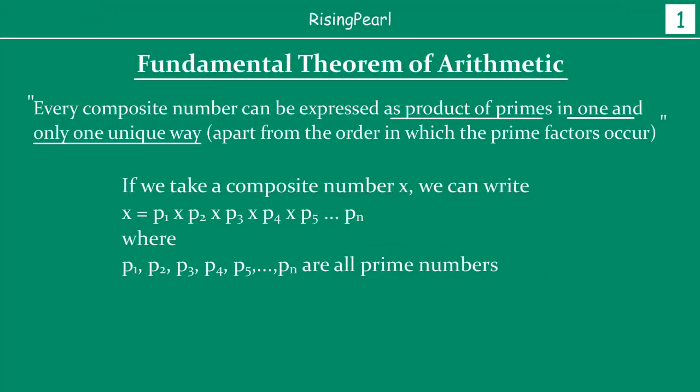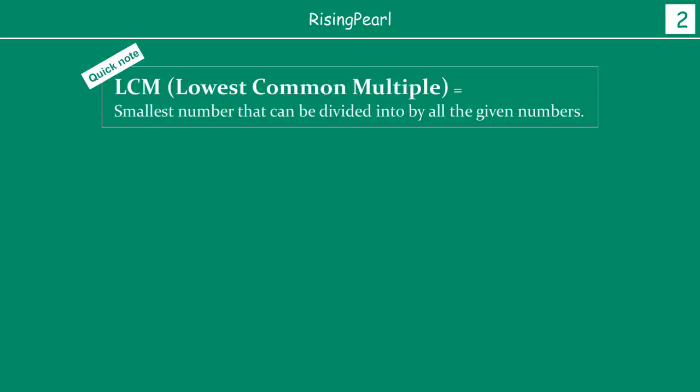Earlier we have seen the fundamental theorem of arithmetic — what is meant by the fundamental theorem of arithmetic — and then we saw that the fundamental theorem of arithmetic directly leads into prime factorization. So today we are going to learn how we use prime factorization to find out LCM.